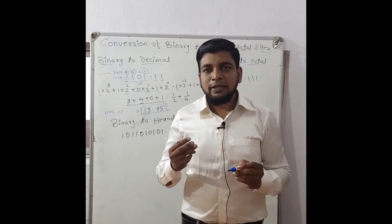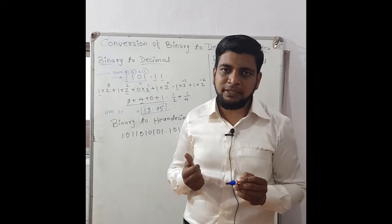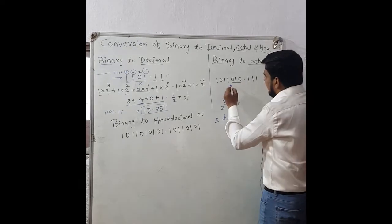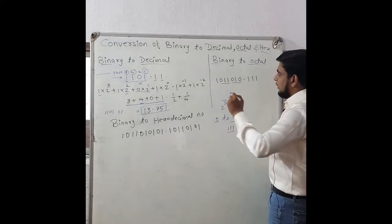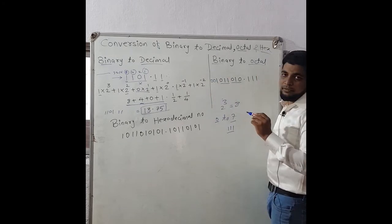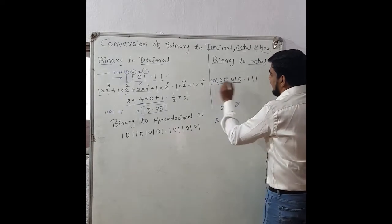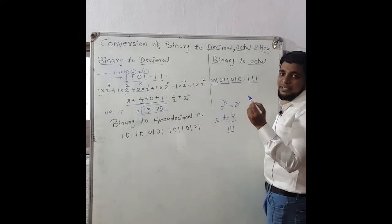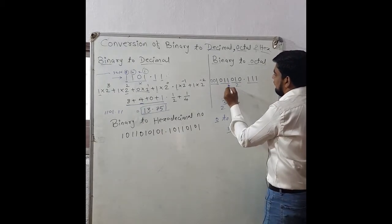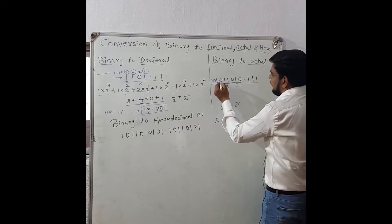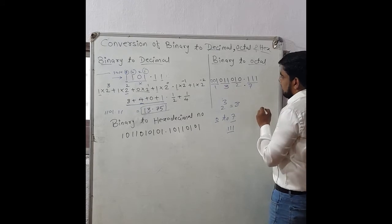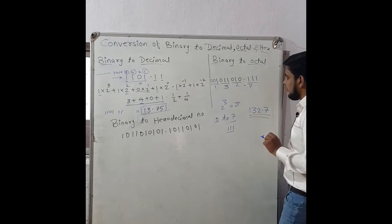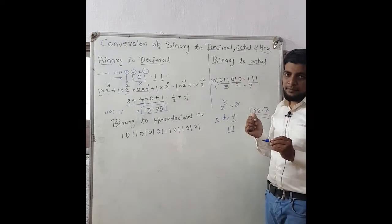So if we need to convert a binary number into its octal equivalent, we make a group of three bits starting from the LSB. If only a single bit remains at the MSB, we add zeros — adding zeros to the MSB has no effect on the number's value. For the fractional part, similarly make groups of three bits. For example: 010 is 2, 011 is 3, 001 is 1, and 111 is 7, giving octal equivalent 1 3 2 point 7.